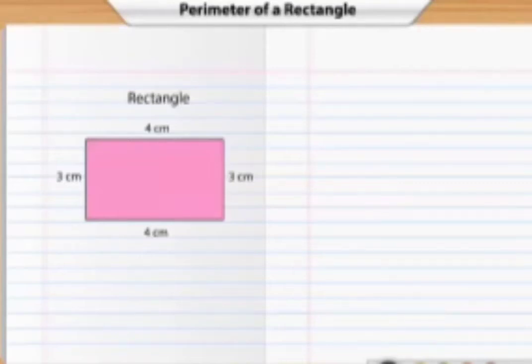Good morning children. Last session we studied how to find the perimeter of a closed figure. We studied the perimeter of a square. Now for the second exercise, watch carefully children, we will give you a rectangle figure. Let us go through the video.